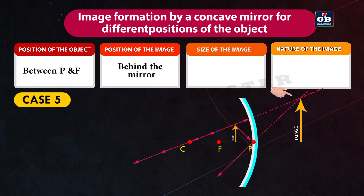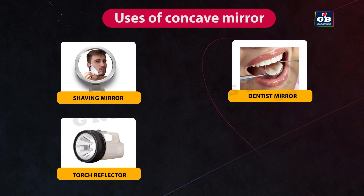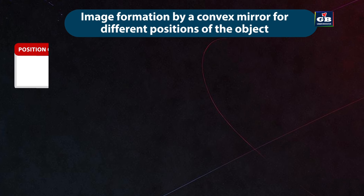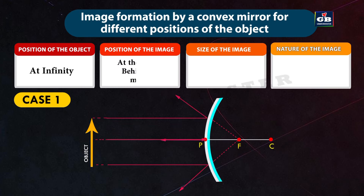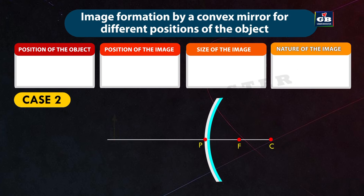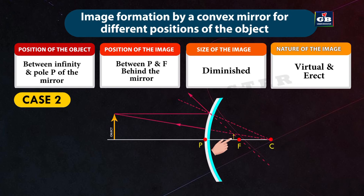Uses of concave mirrors: they are used as shaving mirrors and dentist mirrors, and also in the reflectors of torchlight and vehicle lights. Image formation by a convex mirror — two cases: Case 1 — object at infinity: image at focus behind the mirror, highly diminished and point-sized, virtual and erect. Case 2 — object between infinity and the pole: image between P and F behind the mirror, diminished, virtual and erect.